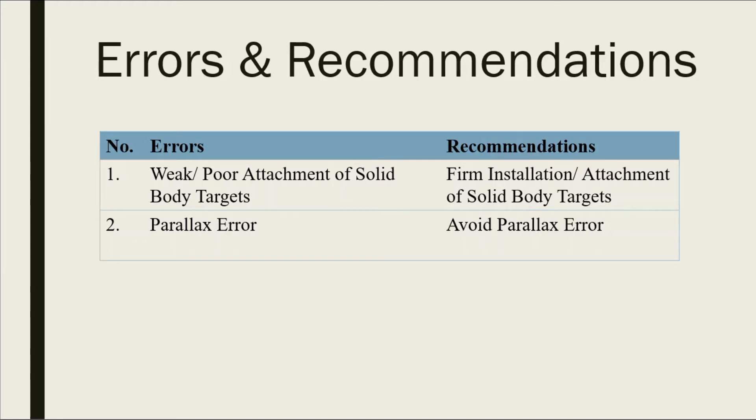Last but not least, the accuracy of the experiment can be improved by reducing some of the errors and recommending some new methods to avoid the errors. The first error is weak and poor attachment of target. The height difference may vary when the targets are not attached right above the nozzle. Hence, the pressure exerted by water to the nozzle might not be at the right angles.